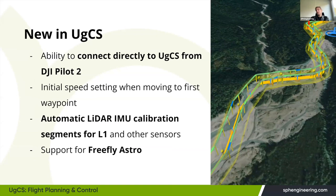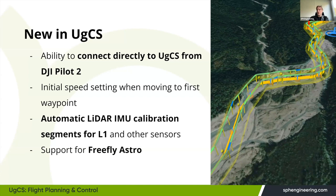In the latest two versions, 4.15 and 4.16, there have been some exciting new changes. Number one: you can now connect drones directly to UgCS from DJI Pilot 2. Drones such as the Matrice 300, DJI M30, and Mavic 3 Enterprise can now be connected using DJI Pilot 2 rather than the older UgCS for DJI app. We also added the ability to set the initial speed when moving to the first waypoint.